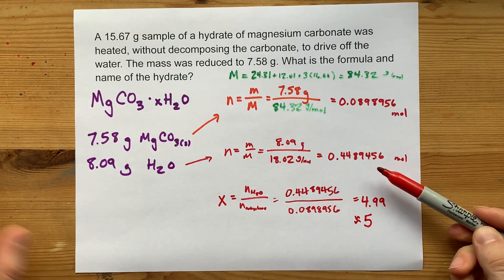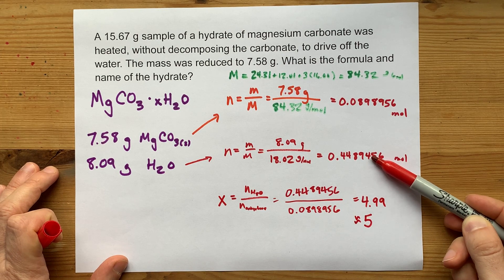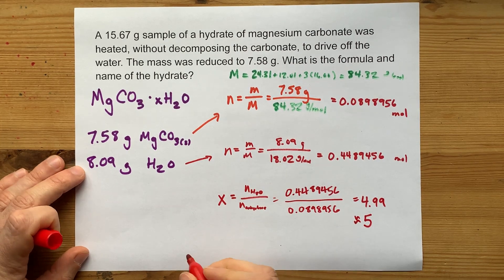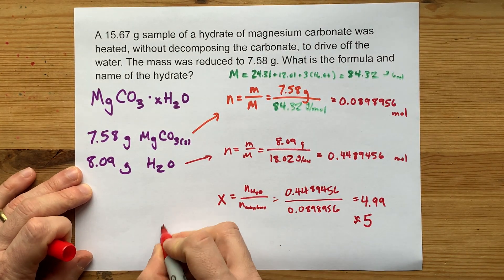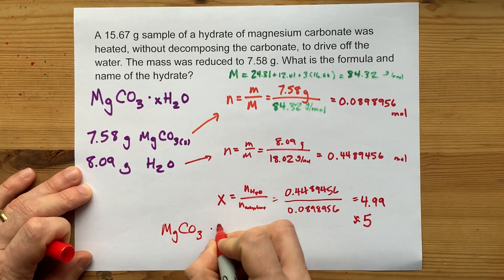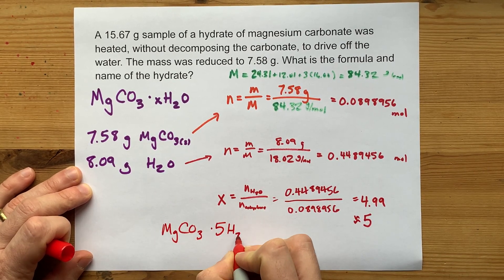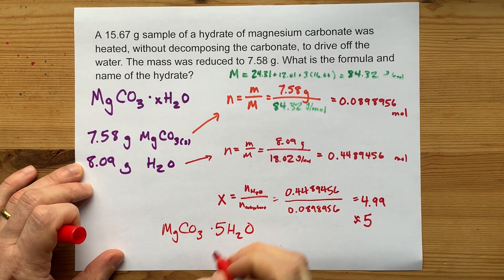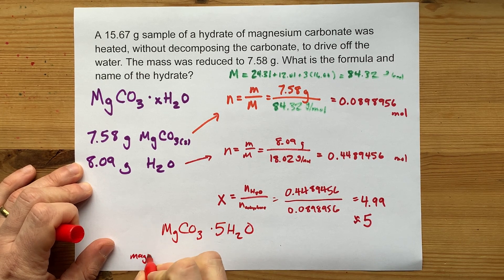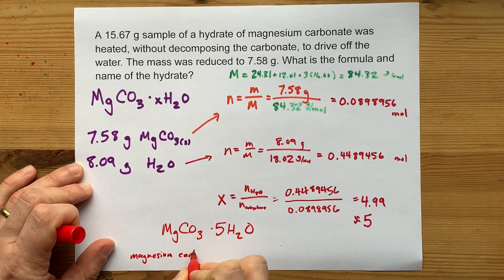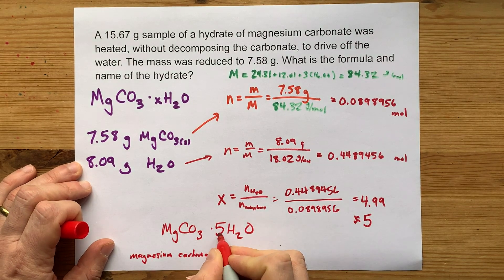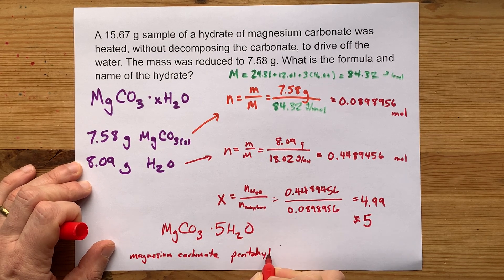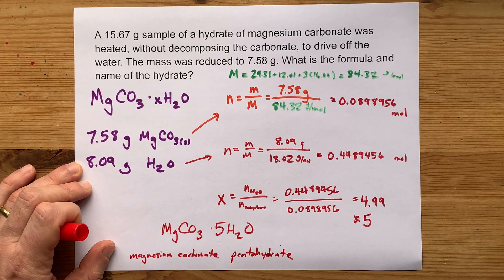So what that means is there's 5 times as many water molecules as there are formula units of magnesium carbonate. That means that the formula of this compound is MgCO3·5H2O. There's 5 times as many moles of water as the anhydrous stuff. And the name of the compound, well, it's obviously magnesium carbonate to start. But your teacher's looking for you to convert 5 to the prefix penta. And you call this a pentahydrate. Magnesium carbonate pentahydrate.